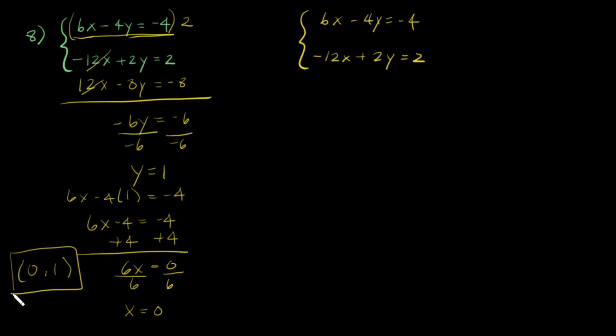If we decide to get rid of the y's, you notice that if we multiply this by 2, that should make that 4y, and then subtract it with the 4y, and that should give you a 0.